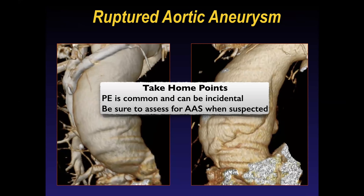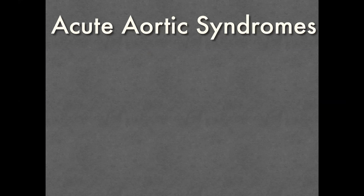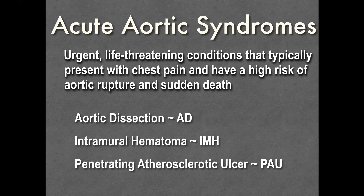Acute aortic syndromes are defined as urgent life-threatening conditions that typically present with chest pain and have a high risk of aortic rupture and sudden death. Classically, we talk about three conditions: aortic dissection, intramural hematoma, and penetrating atherosclerotic ulcer.